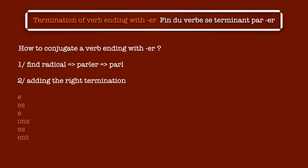Also, for this termination, you can hear that we don't pronounce the two last letters. It's strange at the beginning, but you will get used to it. So you need to memorize them in order to conjugate verbs ending with -er in present tense. If you want to, you can pause the video to read them several times before we move on to a concrete example.